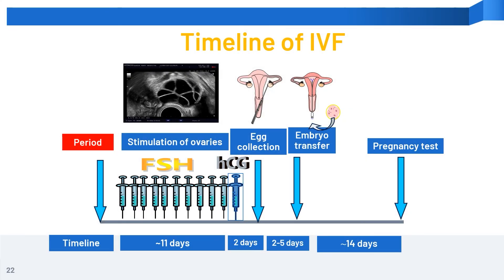I will then talk about the timeline of IVF. This diagram illustrates nicely the timeline of IVF. In the ovarian stimulation phase, which takes an average of 10 to 12 days, daily FSH will be given to stimulate the ovaries. Antagonist will be added to prevent premature ovulation, and ultrasound monitoring of the follicles will be performed. When the follicles are large enough on ultrasound, HCG or agonist trigger will be administered, and egg collection will be arranged 36 hours later.